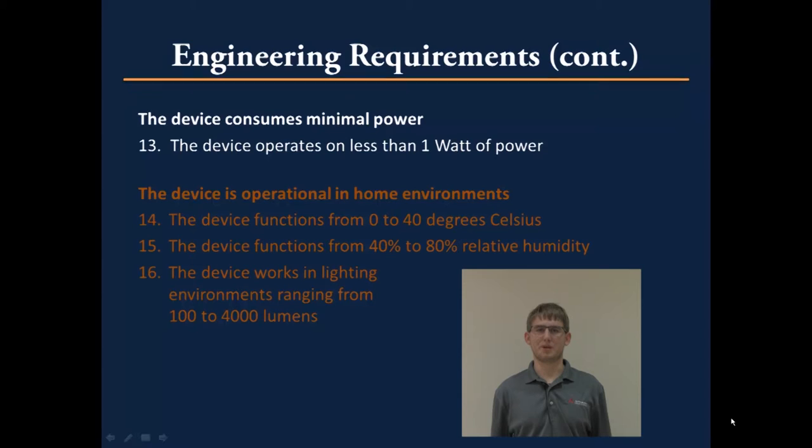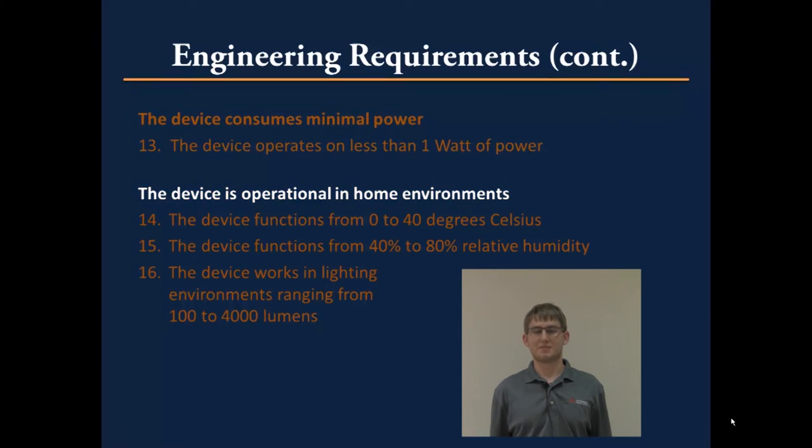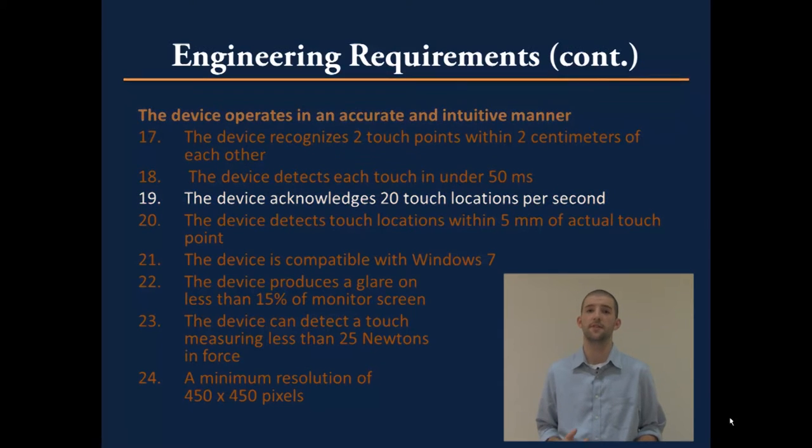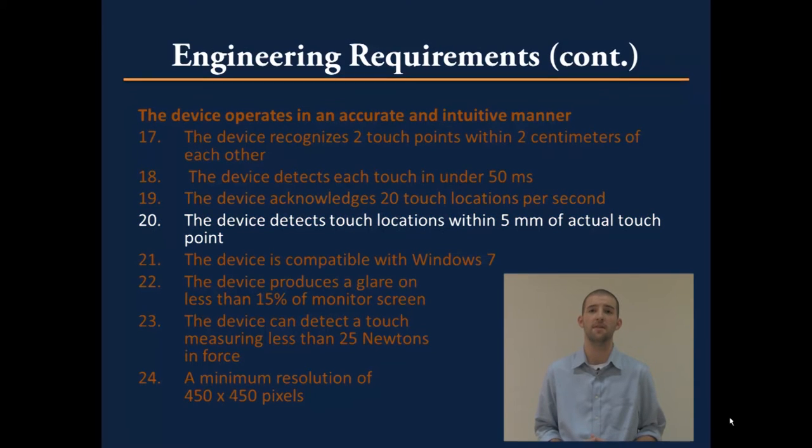The device needs to consume minimal power. Therefore, the device will only be powered from the USB. For obvious reasons, the device needs to operate in typical home environments. This means that the device will be operational in both light and dark environments and work at room temperature. Most importantly, we want the device to operate in an accurate and intuitive manner. In order to make this happen, the device should acknowledge 20 touch locations per second, as well as report a touch location within 5mm of the actual touch point. Nothing is more frustrating than an improperly working touch device, and we hope to avoid this frustration entirely.